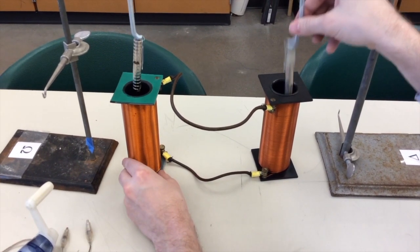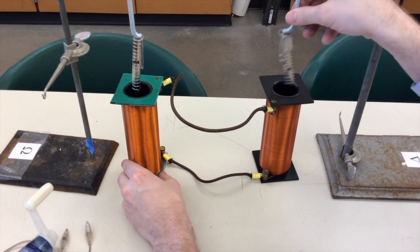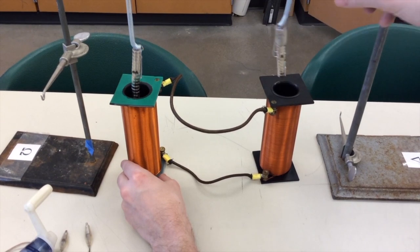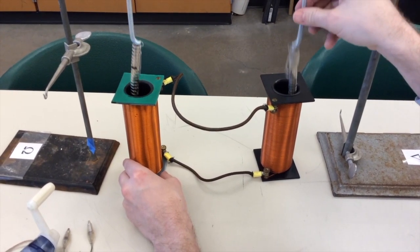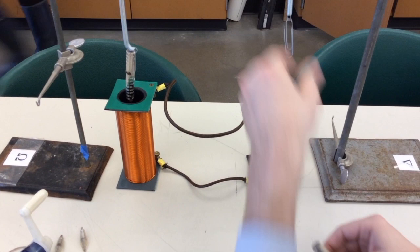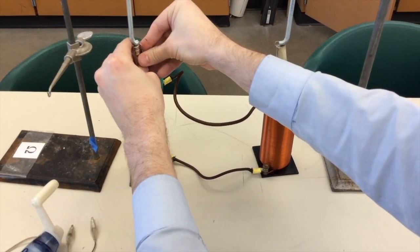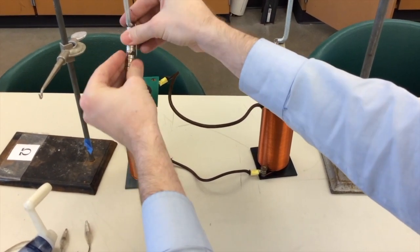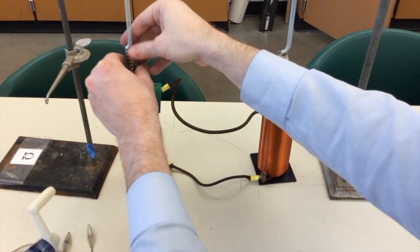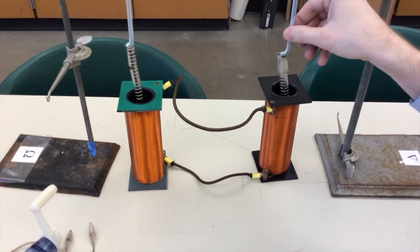If you look carefully, you'll notice that as one magnet goes down, the other goes up. That must be because one of the hanging magnets has north facing down, and the other has north facing up. Let's fix that. Now the magnets are going up and down together.